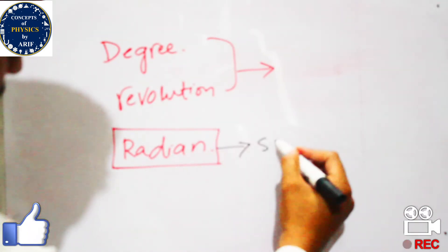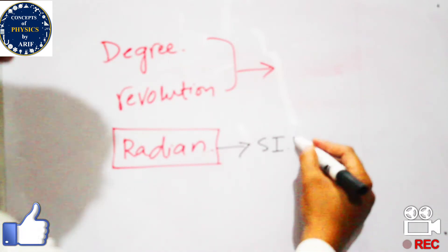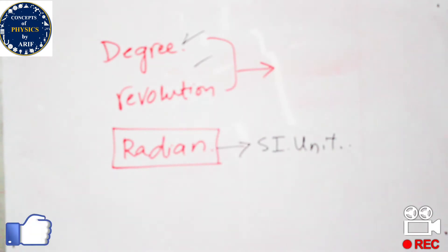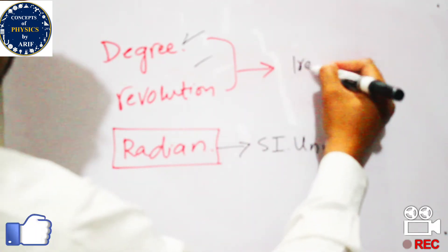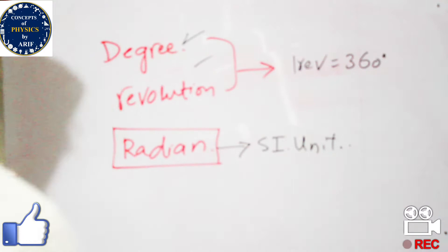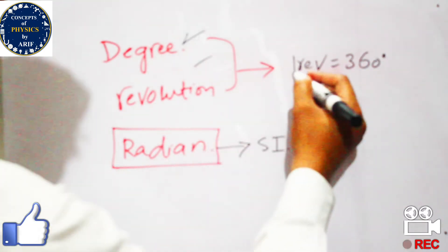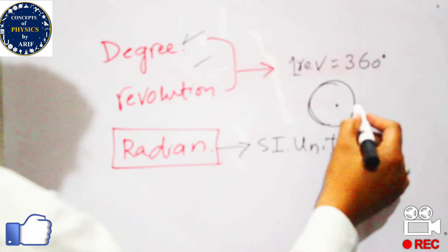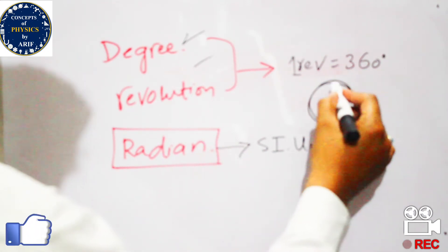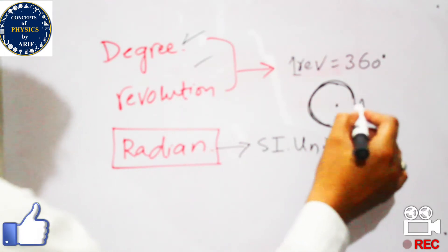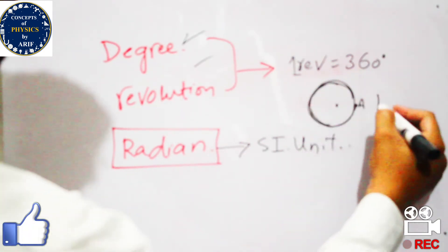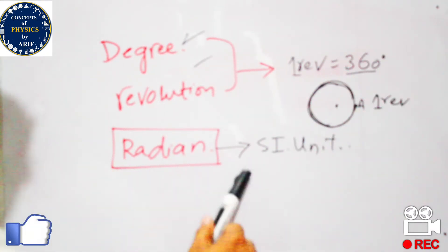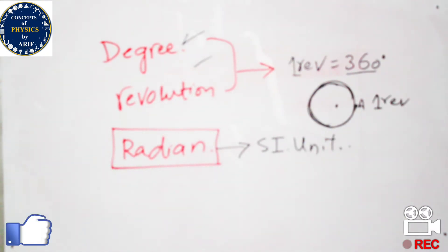We know what degree and revolution are. One revolution is equal to 360 degrees. This means that when a body starts from point A, travels in a circular path, and returns to point A, it has completed one revolution, which equals 360 degrees.